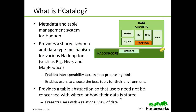H-Catalog is a table and storage management layer for Hadoop that enables users with different data processing tools such as Pig, MapReduce, and Hive to more easily read and write data on the grid. H-Catalog's table abstraction presents users with a relational view of the data in the Hadoop Distributed File System, or HDFS, and ensures that users need not worry about where or in what format their data is stored, whether it's RC file format, text files, or sequence files. H-Catalog supports reading and writing files in any format for which a SerDe, or serialization-deserialization library, can be written.